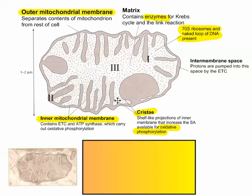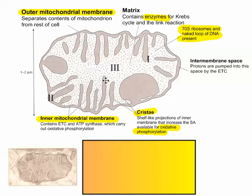These fancy little folds here are called cristae. They help to increase the surface area, as most projecting folds do — like various villi all over the body. Increasing the surface area allows us to have more electron transport chains, which allows us to have more ATP synthase molecules, which allows us to produce more ATP. It just makes the mitochondria much more efficient.